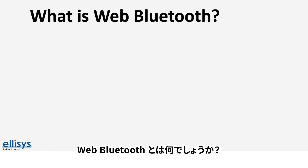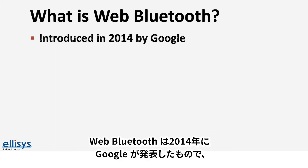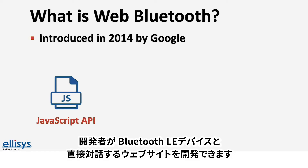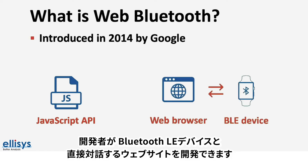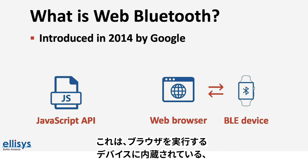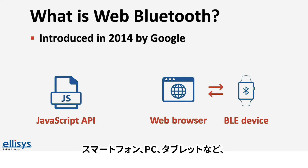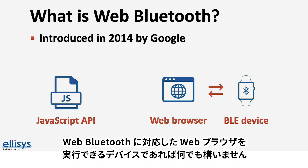So what is web Bluetooth? Web Bluetooth was introduced by Google in 2014. It is provided as a JavaScript API that allows developers to develop websites that interact directly with Bluetooth Low Energy devices. This is done by the browser gaining access to the Bluetooth Low Energy chipset embedded in the device that the browser is running on. This could be a smartphone, a PC, a tablet, or whatever device capable of running a web browser that supports web Bluetooth.